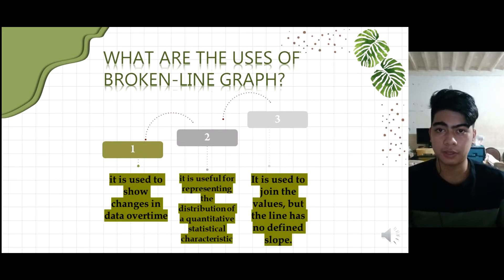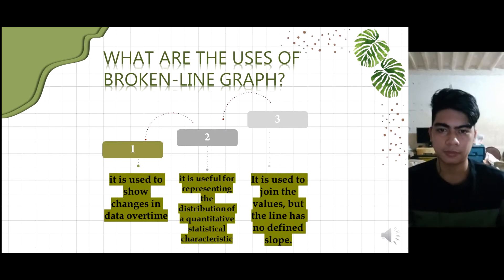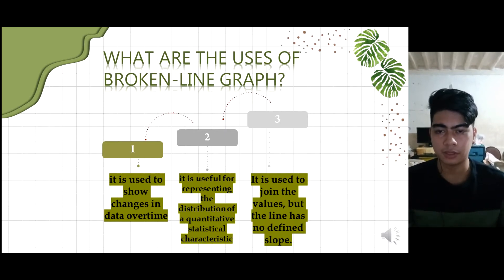These are the uses of a broken line graph. Number one, it is used to show changes in data over time. They display trends or patterns and help us make predictions. Number two, it is useful for representing the distribution of a quantitative characteristic. It is a type of graph fit for a quantitative report. Number three, it is used to join values but the line has no defined slope. These points correlate with each other and plays an important part of the graph.